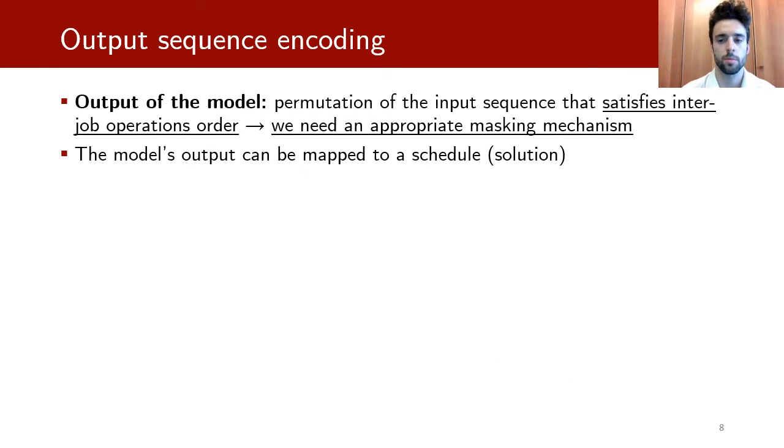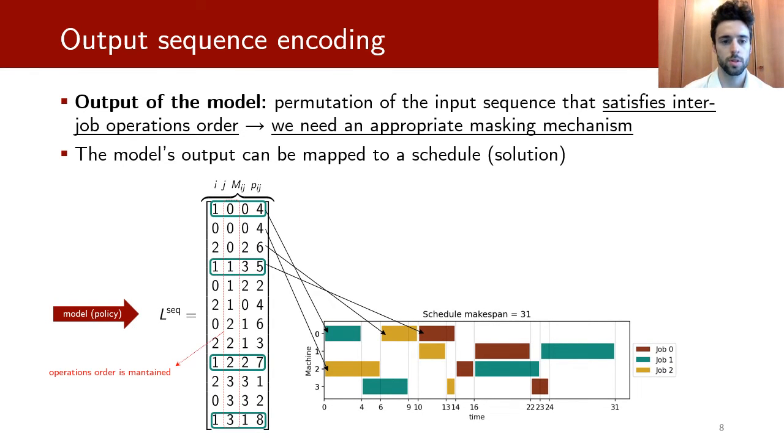The output of the model is a permutation of the input that satisfies inter-job operations order. This is very important and requires the design of an appropriate masking mechanism. Here you can see the model that produces a valid permutation, and the permutation can be mapped to a schedule. You can map an output of the model to a schedule by assigning each row to the earliest time possible, at which the machine is free and the previous operation of the same job has been already executed. You can see that the output of the model maintains the order of operations.